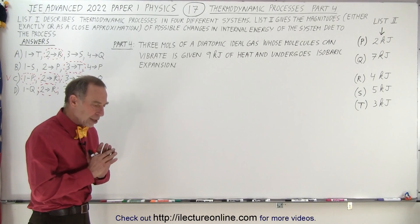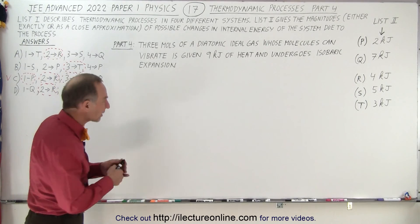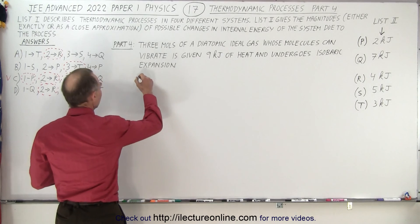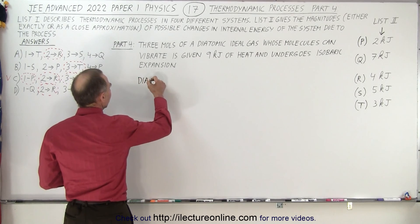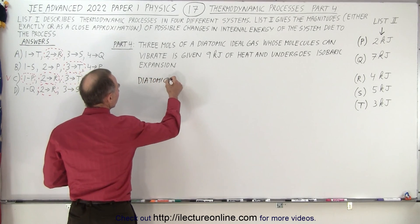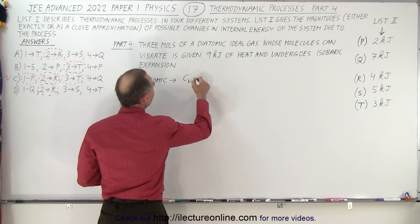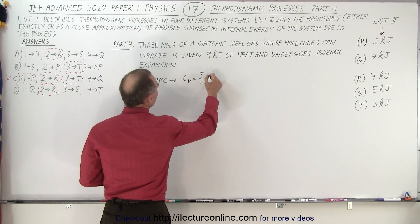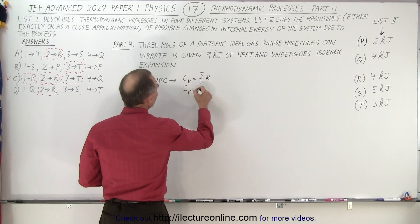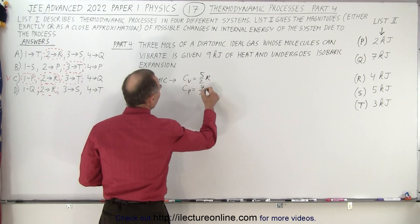So normally if we ignore vibration for diatomic molecules we have the following situation. For diatomic molecules we have C sub V is equal to five over two R and C sub P is equal to seven over two R.